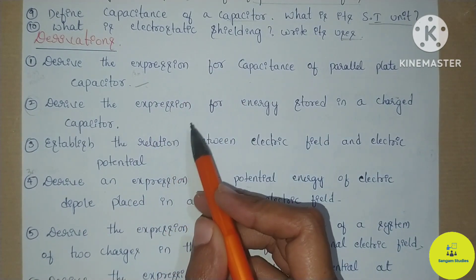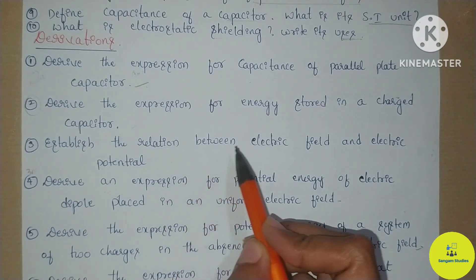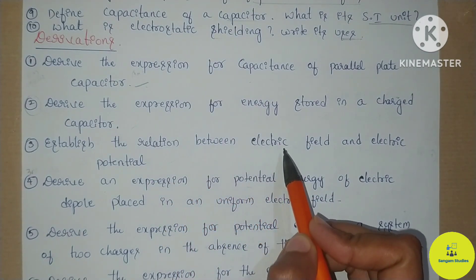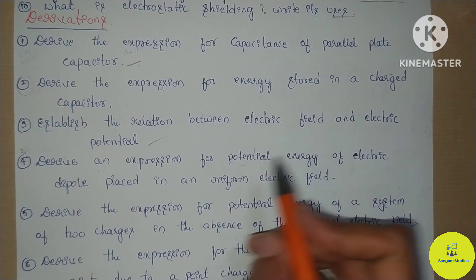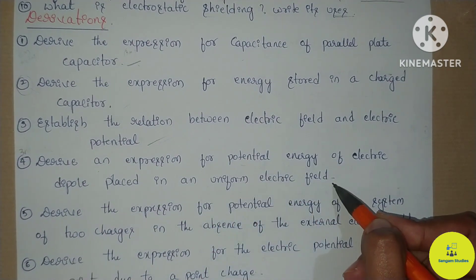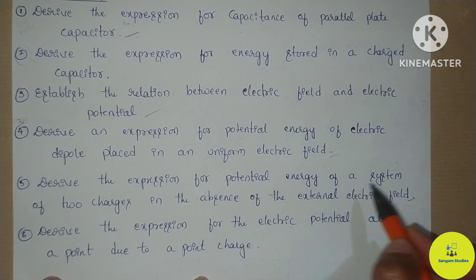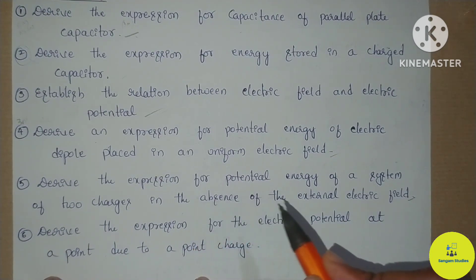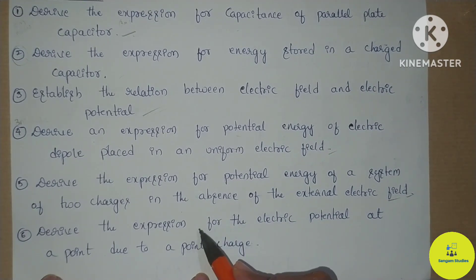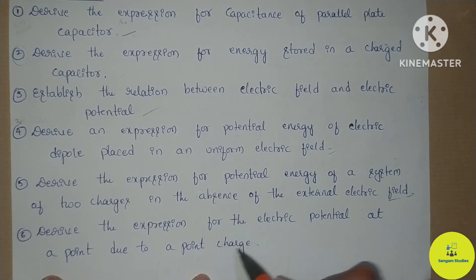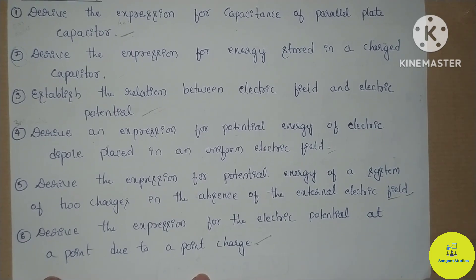The next derivations are: derive the expression for energy stored in a charged capacitor; establish the relationship between electric field and electric potential; derive an expression for potential energy of an electric dipole placed in a uniform electric field; derive the expression for potential energy of a system of two charges in the absence of an external electric field; and derive the expression for electric potential at a point due to a point charge. These six derivations are very important.